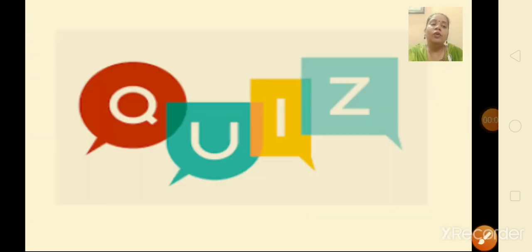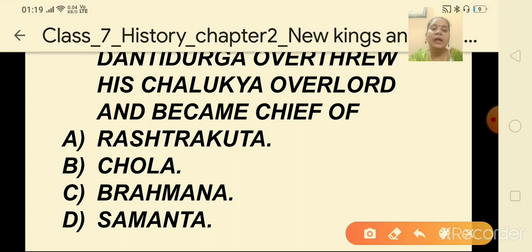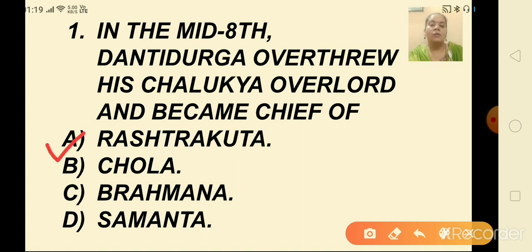Now let us move on to quiz time. First question: In the mid-8th century, Dantidurga overthrew his Chalukya overlord and became the chief of which dynasty — Rastrakuta, Chola, Brahmana, or Samanta? The correct answer is Rastrakuta.